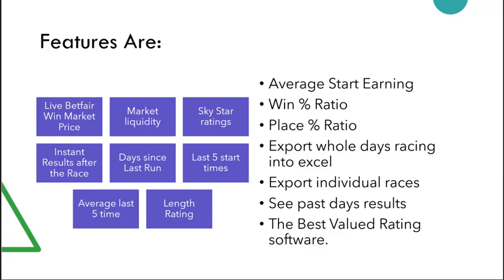Day since last run is important if you are looking at greyhounds that are backing up pretty quickly. The last five start times — that is the same as in the old version. We have the average for the last five start times, and that gives us the very effective length rating, which has been going extremely well. We've also added average start earnings, win percentage ratio, and place ratio. We can export the whole day's racing into Excel, or you can use it in OpenOffice. You can export individual races, and you can see past day results by clicking on the drop-down calendar to see what was happening two, three, or four days ago, and download that Excel for research.